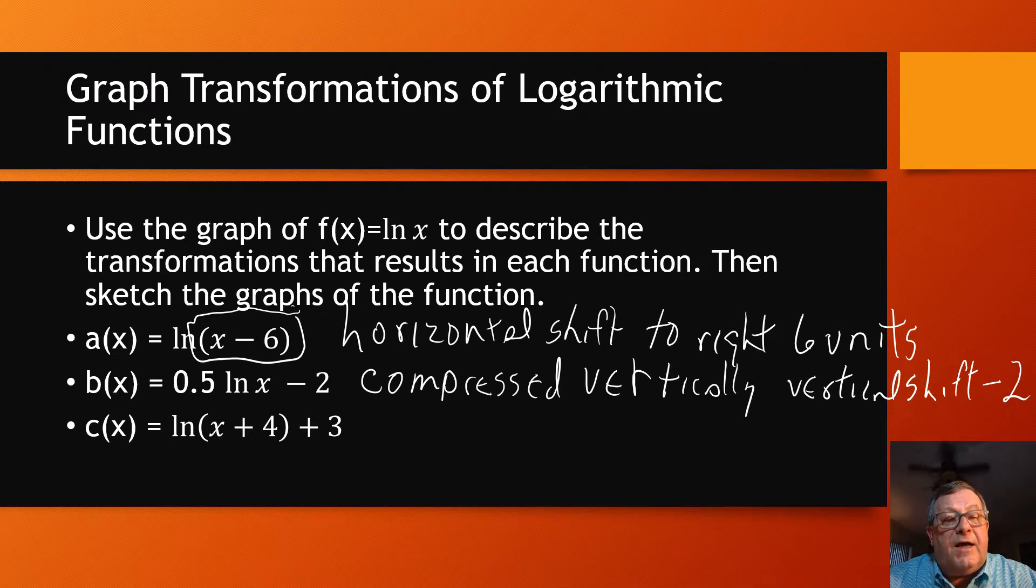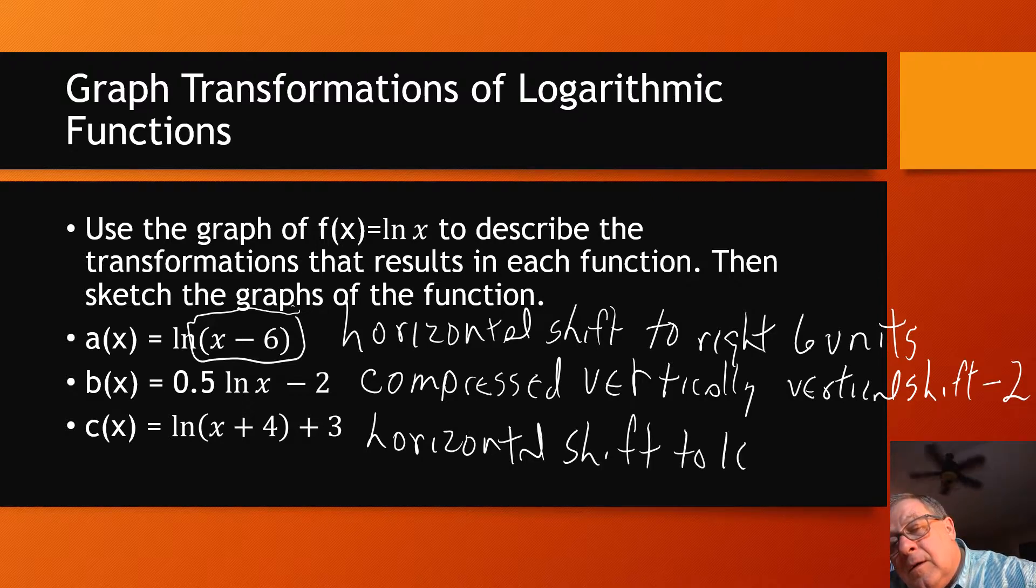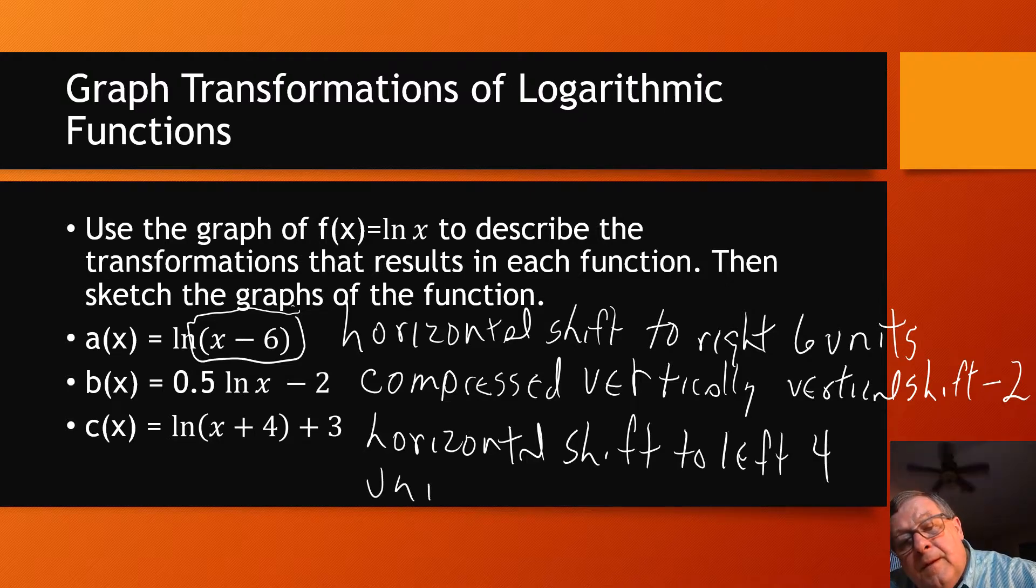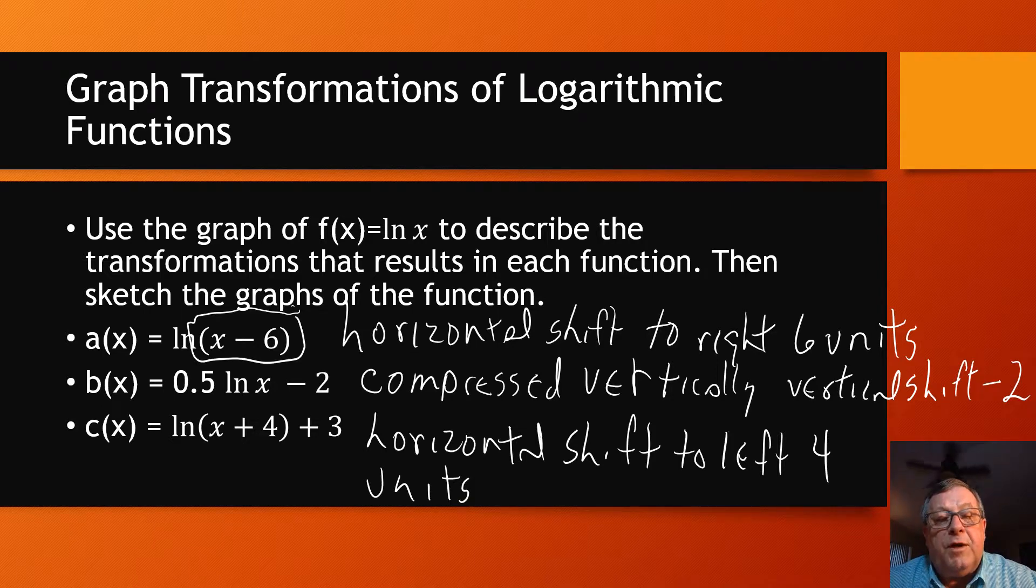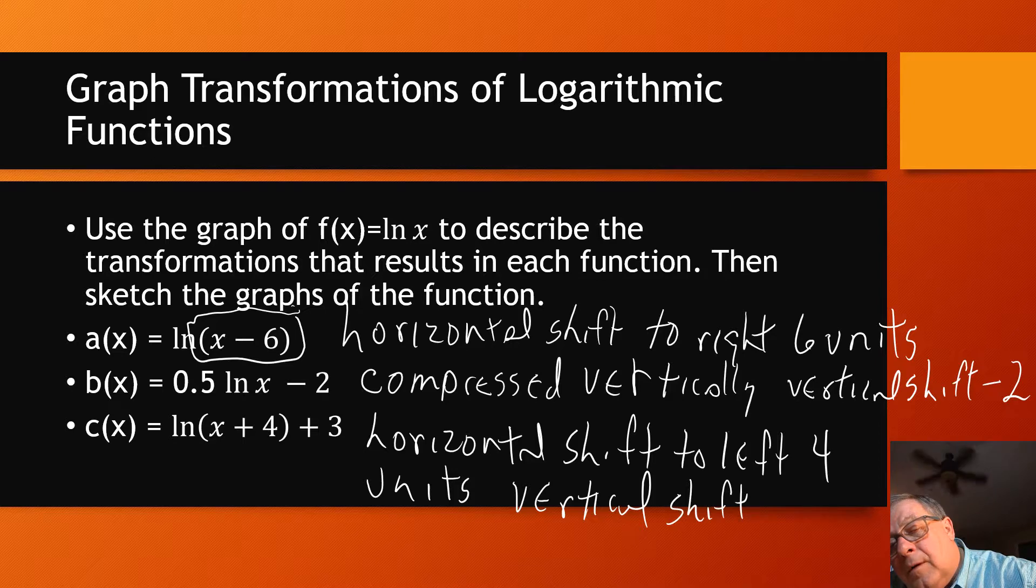And then the third one, we've got c(x) equals the natural log. And again, in parentheses, I've got x plus 4. That x plus 4 tells me I've got a horizontal shift to the left, 4 units. And then the positive 3 outside the parentheses, again, is a vertical shift up 3.